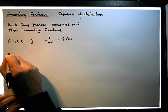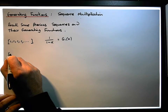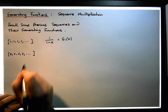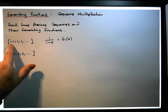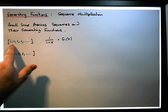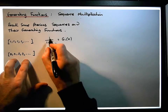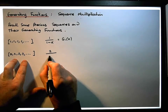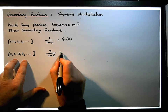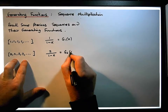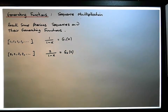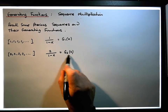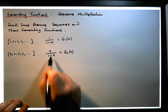We also had the constant sequence of 2, 2, 2, 2, ..., which is simply the constant sequence of ones with every term multiplied by two. The generating function for that is simply two times the generating function of the constant sequence of ones, so it's 2/(1 minus x), and we call that g₂(x).